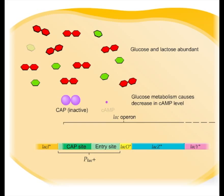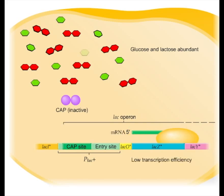This results in insufficient CAP-cyclic AMP complex to bind to the CAP site which in turn does not facilitate RNA polymerase attachment to the promoter, so only a very low level of transcription can occur. This occurs even though repressor proteins are removed from the operator site due to the presence of lactose.